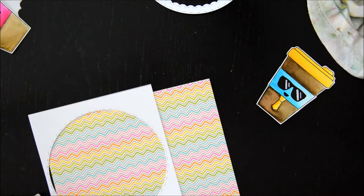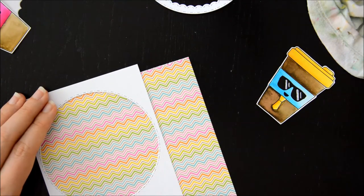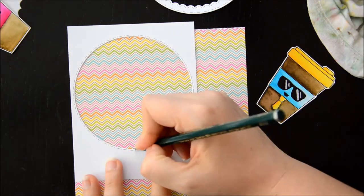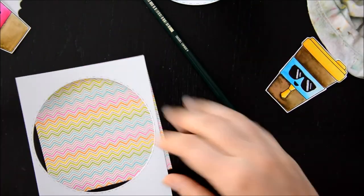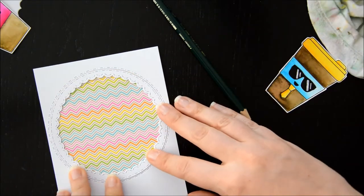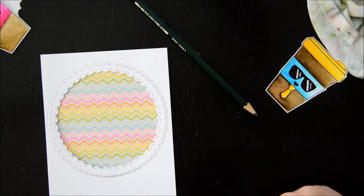And because I wanted my background for the shaker window to be bright and cheerful, I decided to use this paper. This is from the Hello Sunshine 6x6 paper pad by Doodlebug, and I'm cutting it to size to fit the back of my shaker card.